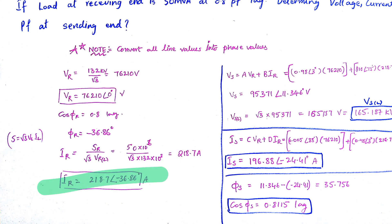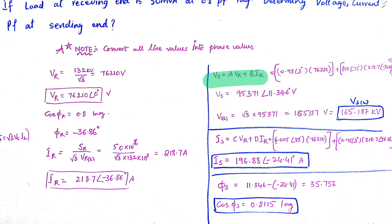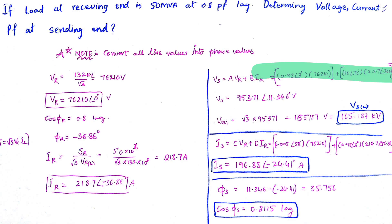So Ir when you write it in polar form is going to be 218.7 at angle minus 36.86. Why minus 36.86? Because its power factor angle is minus 36.86. What is basically this φ power factor angle? It is the angle between the voltage and current. So φr will be the angle between Vr and Ir. If Vr is at 0, then Ir will be at minus 36.86 because it is lagging. Now we can find Vs. A is given, B is given. You know Vr phase value, you know Ir phase value. Just put them. You get Vs as 95,371 at angle 11.346 degrees. You have to convert this into line values because the examiner expects you to write your answers in line values. Just multiply the magnitude by root 3. You get 165.187 kV - the sending end voltage in line value.